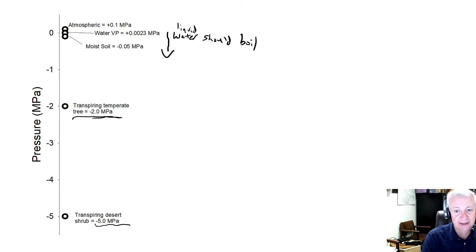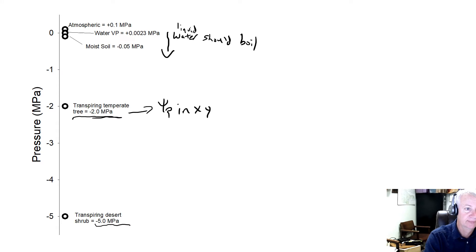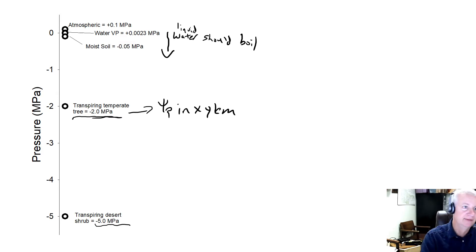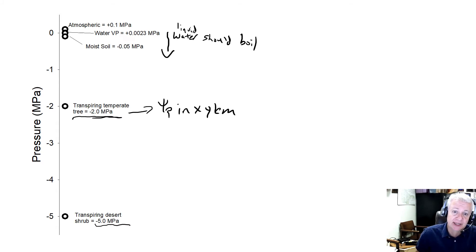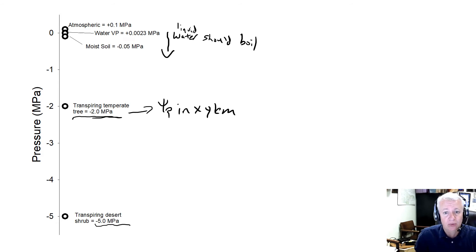Not only are those water potentials — and one way to think about this is Psi P in the xylem, the pressure potential in the xylem — not only is it below the vapor pressure of water, it's negative. So it's very much below. This is really an unusual situation in nature. Xylem is probably one of the few places in nature where water exists in a liquid state below its vapor pressure.